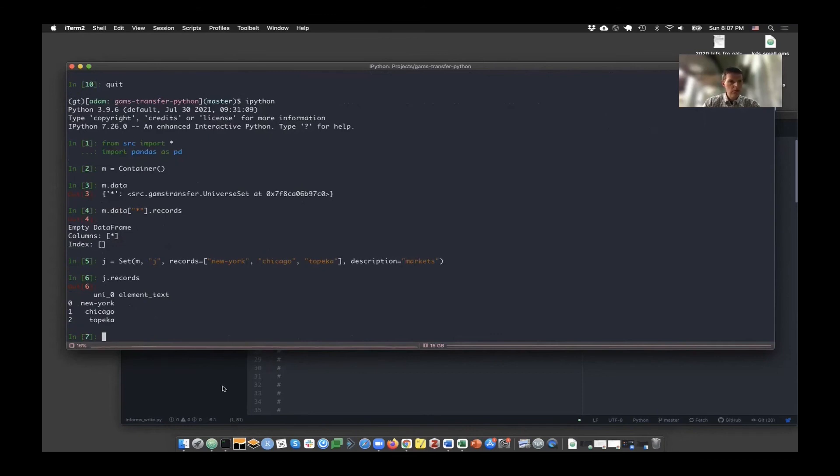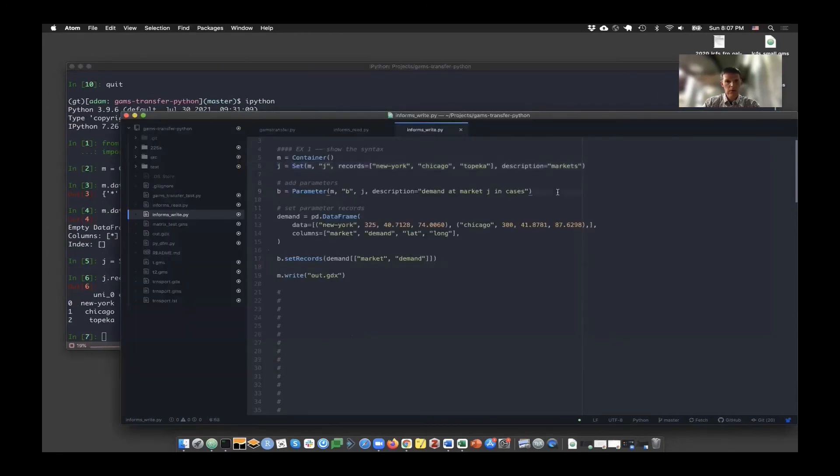So J exists by itself as well as within the container, but they're linked together. So J records, you can see that the set elements of J are New York, Chicago, Topeka, just like we would have in a GAMS model.